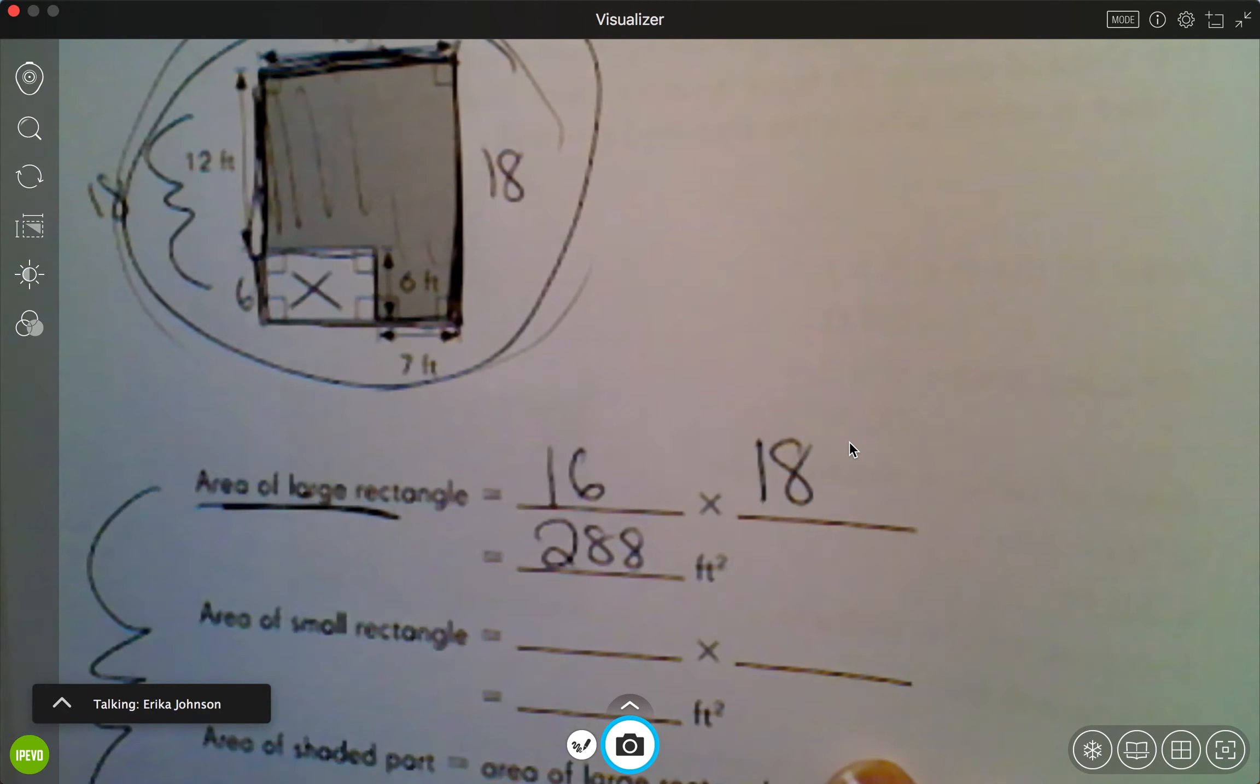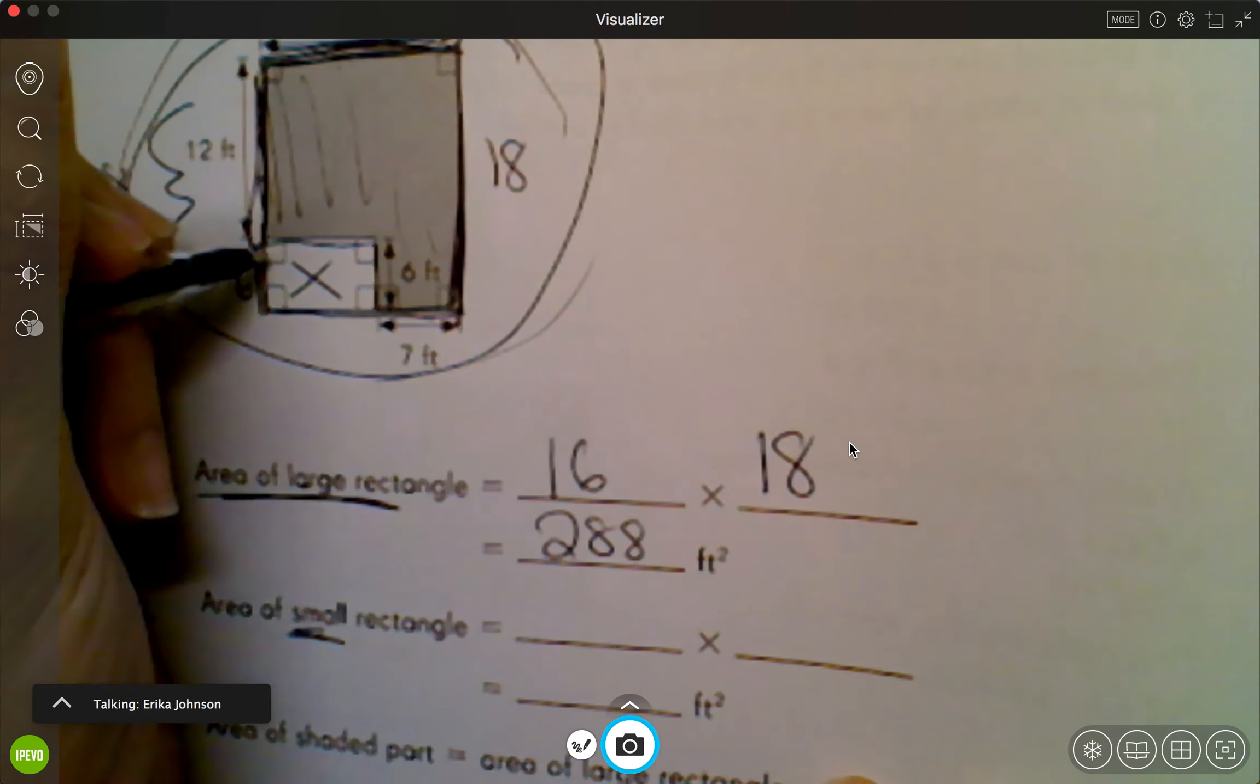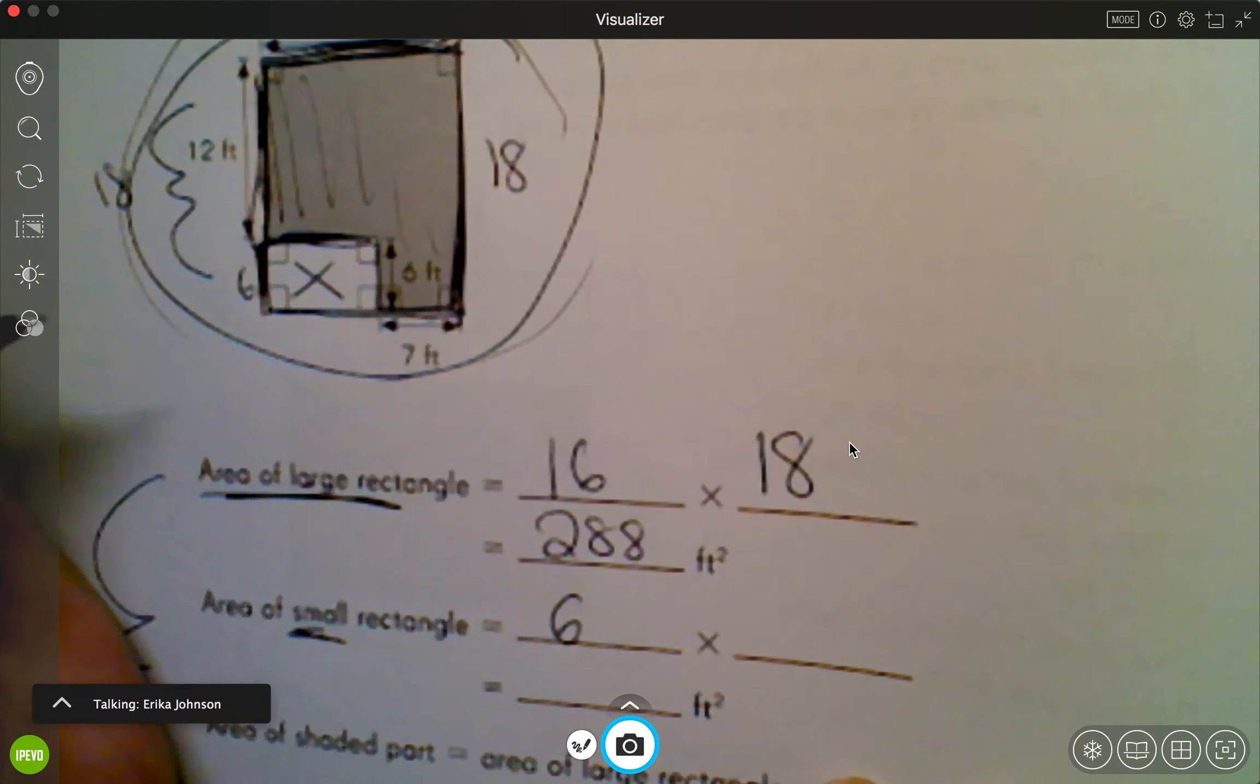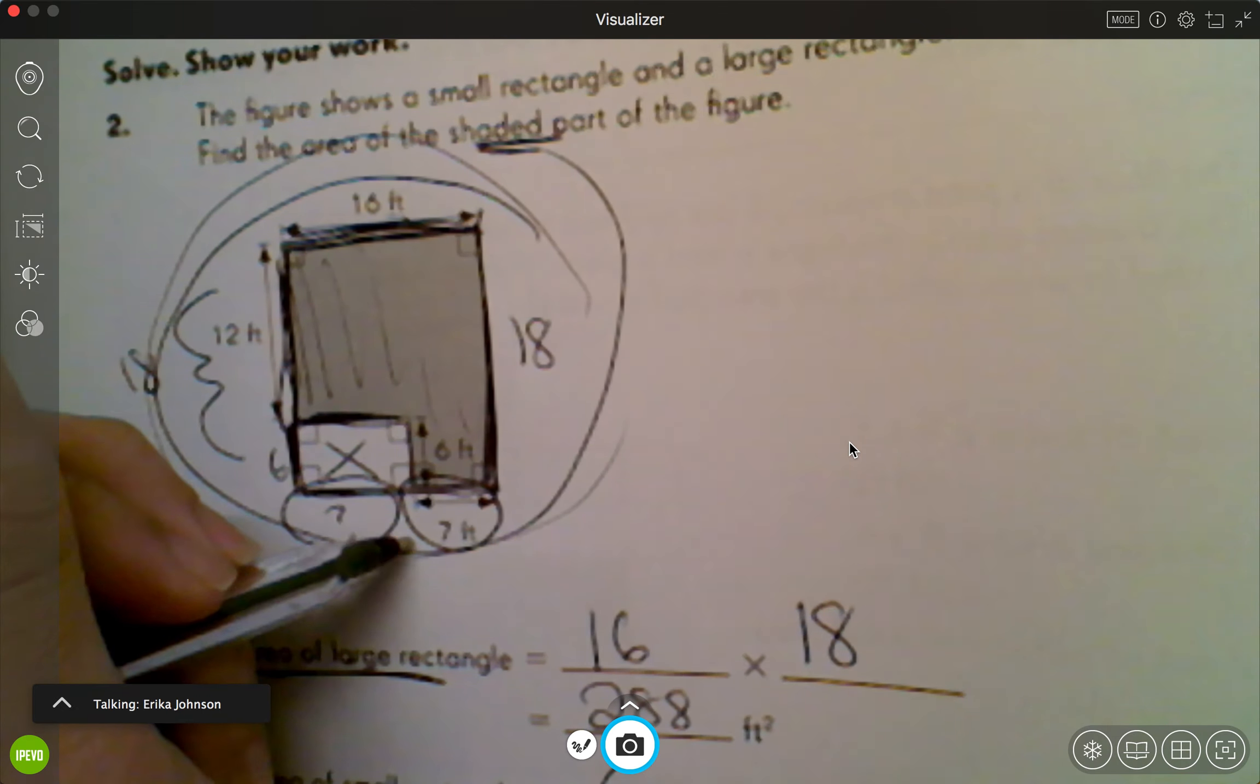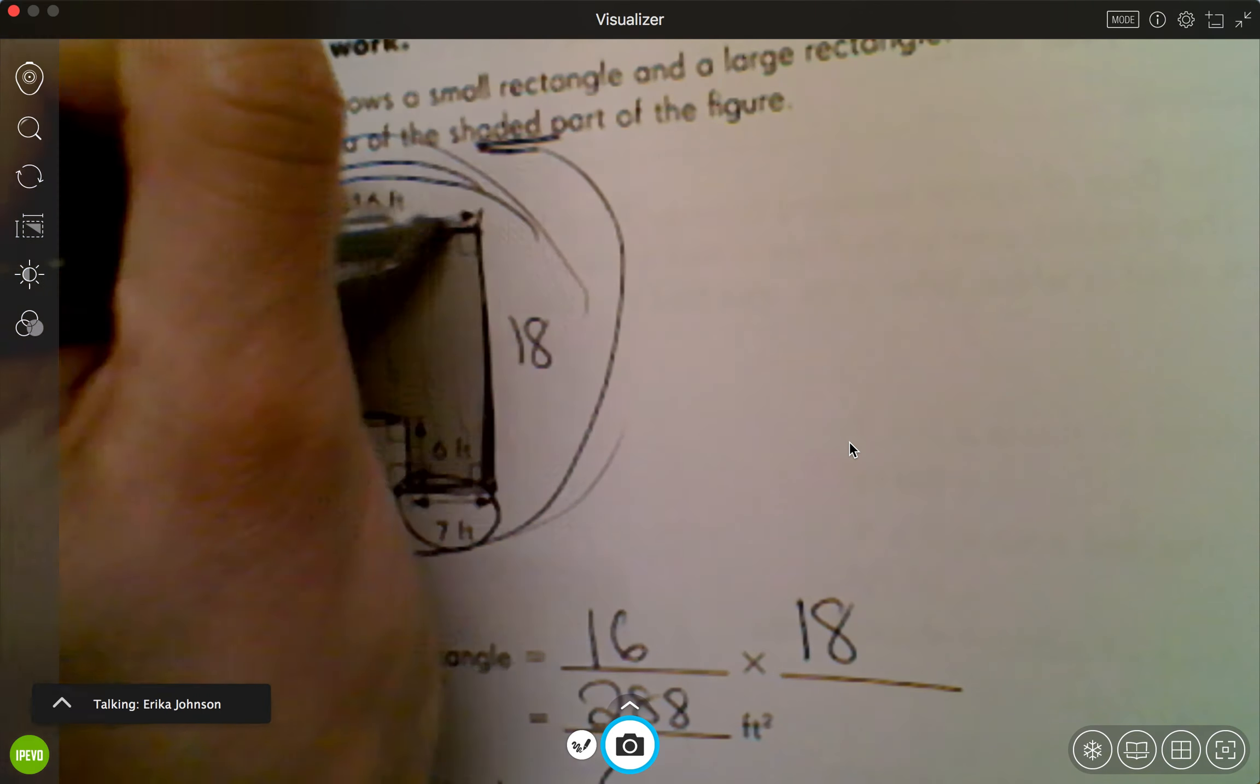Now I'm gonna find the area of the small rectangle. So again I'm gonna do length times width. So I see that this is 6, and then I need to figure out how long this side is. Well let's see, if this piece is 7 and I'm trying to find that piece right there, if I look at the opposite side of this rectangle I see that this whole thing is 16.